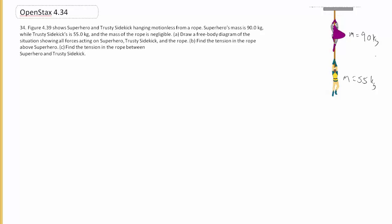We're asked to find the tension in the different parts of the rope. First, let's draw a free body diagram of the trusty sidekick. I'm going to label all of his variables. I'm going to label him TS and this is superhero SH. Let's look at the trusty sidekick. You'll see why we're starting with him in a second.